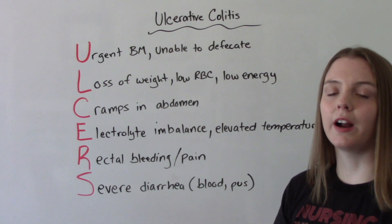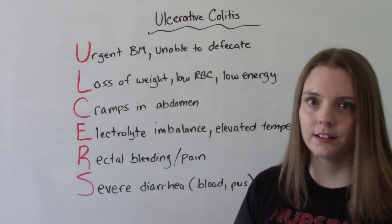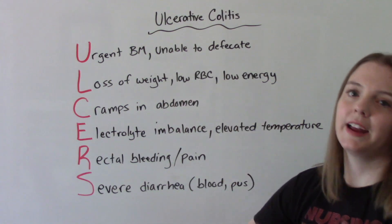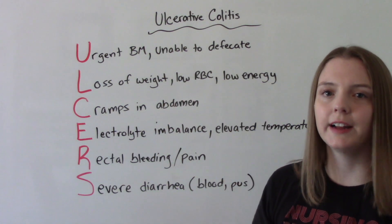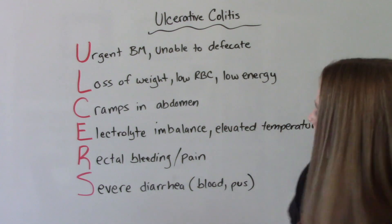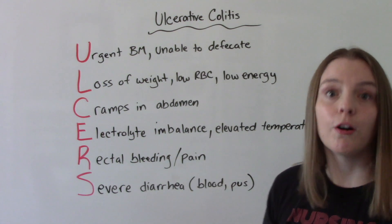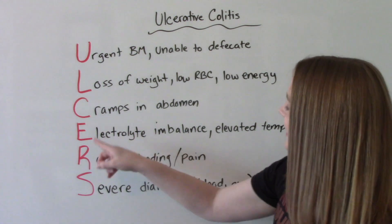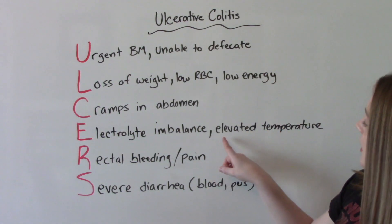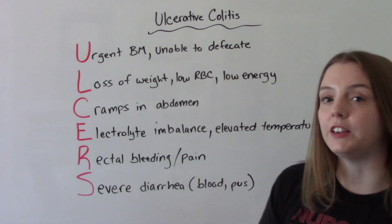Sometimes when you are having these frequent bowel movements, they can contain blood, so you can become anemic. Because of all of this, it throws off your fluid and electrolytes — you become dehydrated, you have low energy, you're fatigued. C is cramps, abdominal cramping, which is very uncomfortable. E is electrolyte imbalance because you're dehydrated, and the second E is for elevated temperature — these patients can present with a fever.